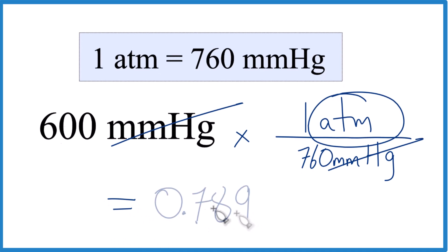We get 0.7894. Let's call it 0.789. And the units, that's all that's left is atmospheres. So we know we did it correctly.